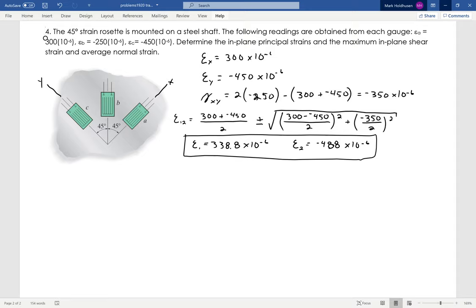Then I do the same thing for the shear strain. Plug and chug into my equation: 300 minus negative 450 by 2 squared, plus negative 350 over 2.